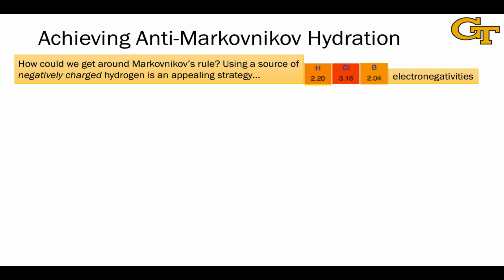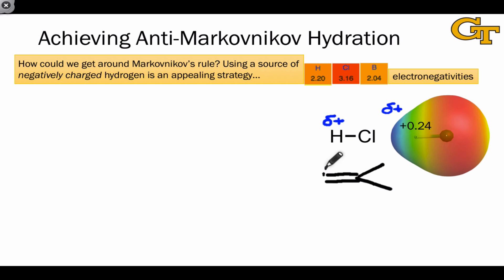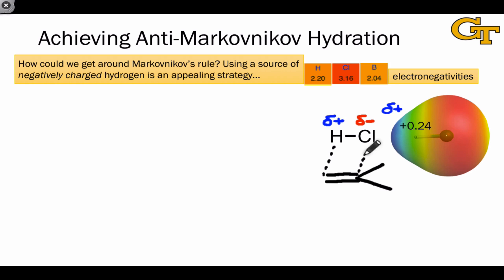To begin thinking about achieving the opposite site selectivity, let's look at something that adds to an alkene in a Markovnikov-type fashion: HCl. Looking at the electron density map for HCl, due to the strong electronegativity of chlorine, the hydrogen atom is significantly partially positive—about +0.24 in partial charge based on a quantum chemical calculation. When HCl reacts with an alkene, the partially positive hydrogen forms a bond to the terminal carbon, ensuring that positive charge in the transition state and eventually in the carbocation intermediate will be located on the more stable, more substituted position. Analogously, the chlorine, which is partially negative in HCl, forms a bond to the more substituted position.